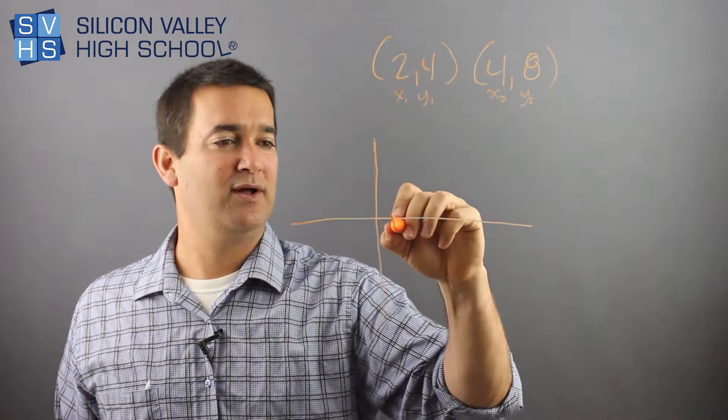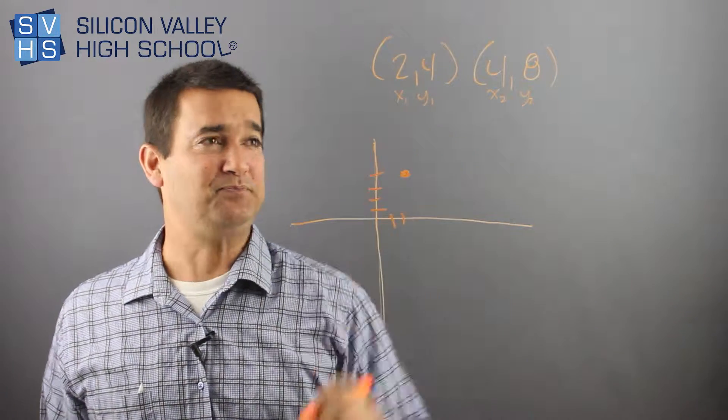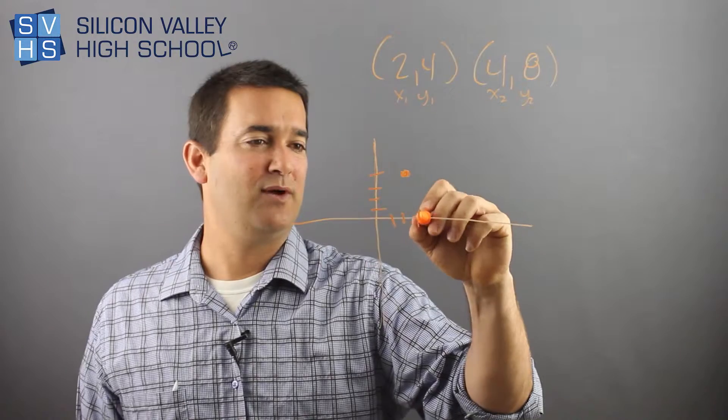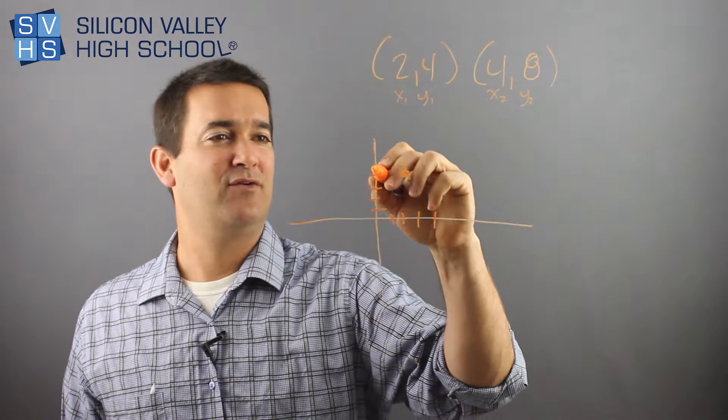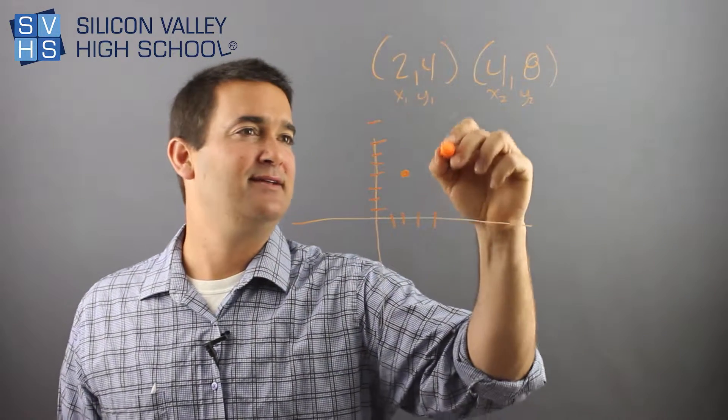So 2, 4. 1, 2, 3, 4. It'd be about there. Then you have 4, 8. So 1, 2, 3, 4, 4, 5, 6, 7, 8. So it'd be about here.